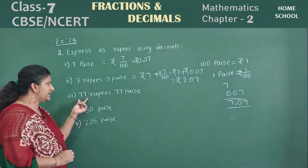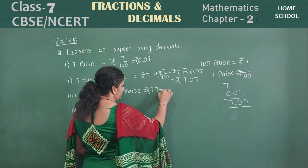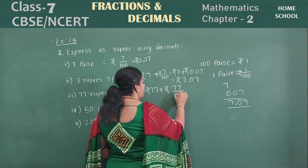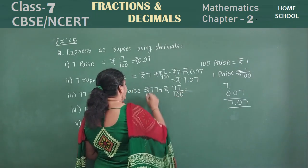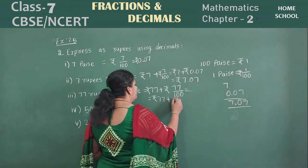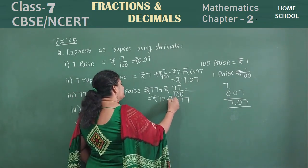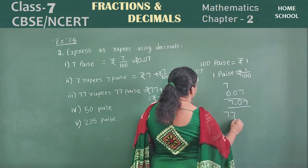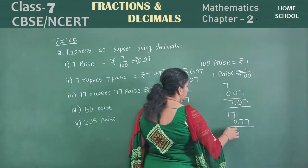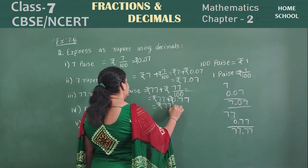See the third one: 77 rupees, 77 paise. That will be 77 rupees plus 77 paise. Convert children: 77 by hundred, which is 0.77 rupees. Add this: 77 plus 0.77. This is rupees and this is paise. Finally, your expression in decimal is 77.77.